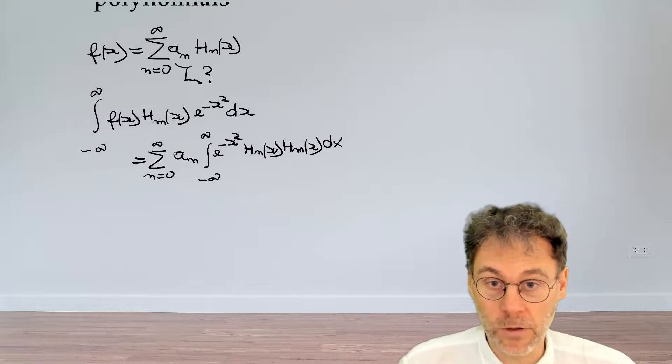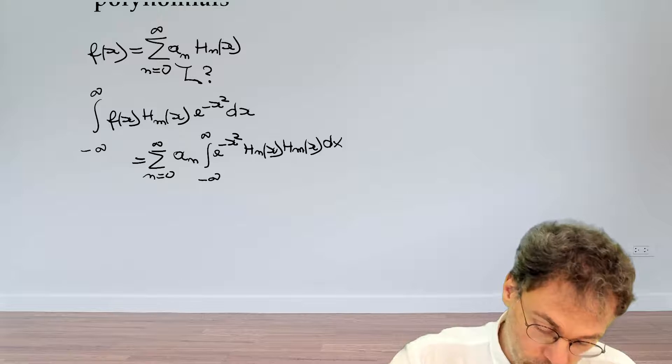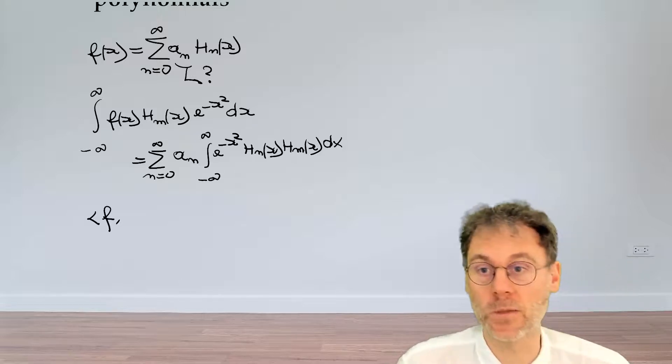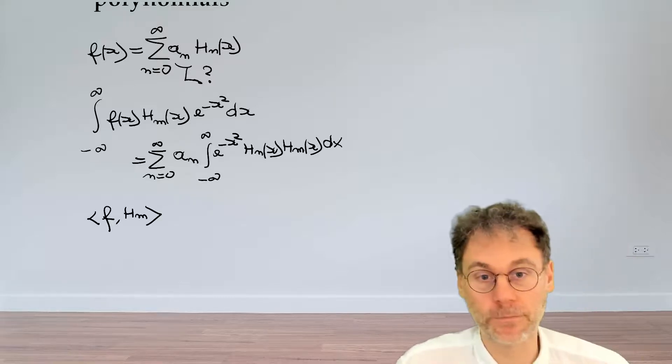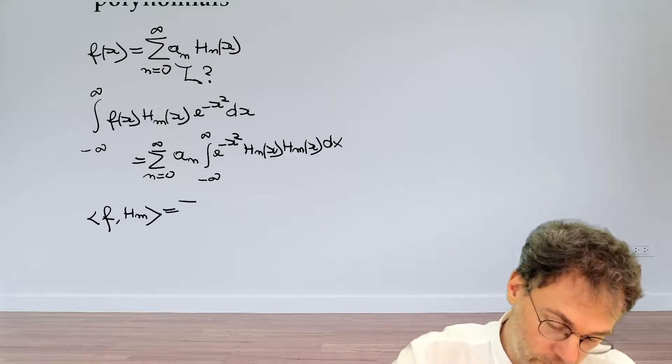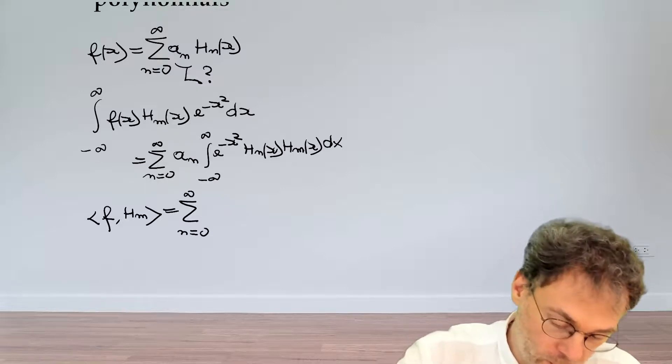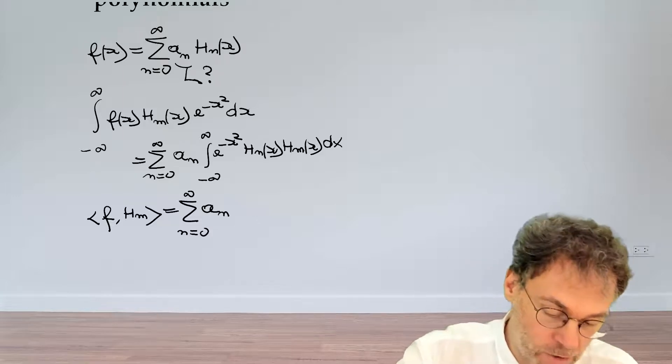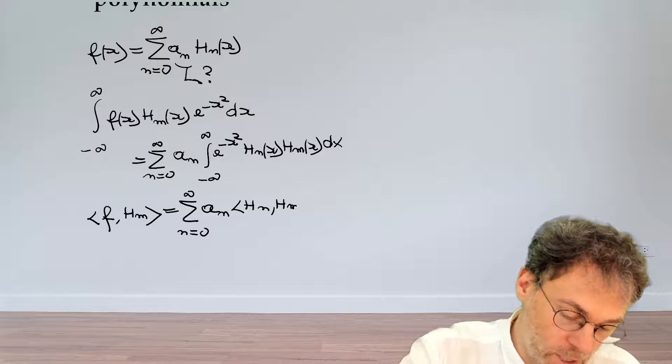Now with our particular definition of scalar product, what we've done here can be written much more clearly as the scalar product of the function we want to expand with a basis function of order m. And on the right hand side we have the sum n going from zero to infinity of a_n and then we have the scalar product H_n with H_m.